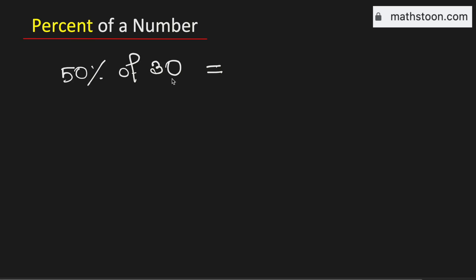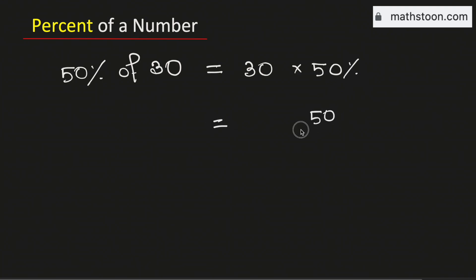Let us find 50% of 30. To do this, we will multiply 30 with 50%. We know that 50% is the same as 50 over 100, and we will write 30 as 30 over 1. Now we will cancel the common zeros.